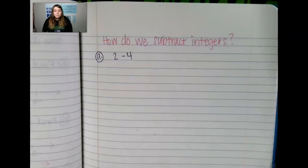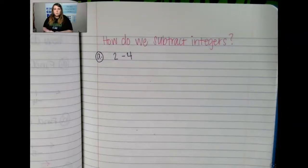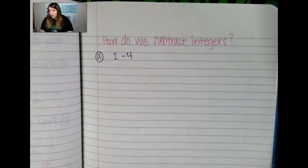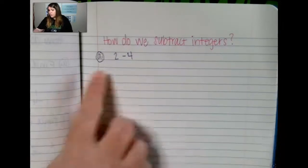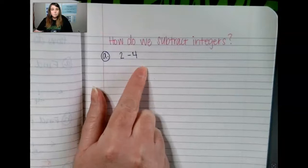You should also be able to show me how to model the subtraction of integers, and be able to find the difference with absolute value, which will be in our next lesson when we use a number line. So let's first start with this problem here: 2 minus 4.